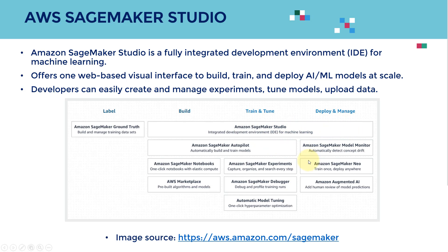Within SageMaker Studio, there is a feature called Amazon SageMaker Autopilot. You will be able to automatically build and train models without knowing any code at all. What you need to do is just upload the data to S3, and then on autopilot, SageMaker will build and train not just one model, but a series of models trained with different strategies. It will show you all these different models already trained, and you can select the best one, click deploy, and that's it — done, without even having any machine learning or AI knowledge.